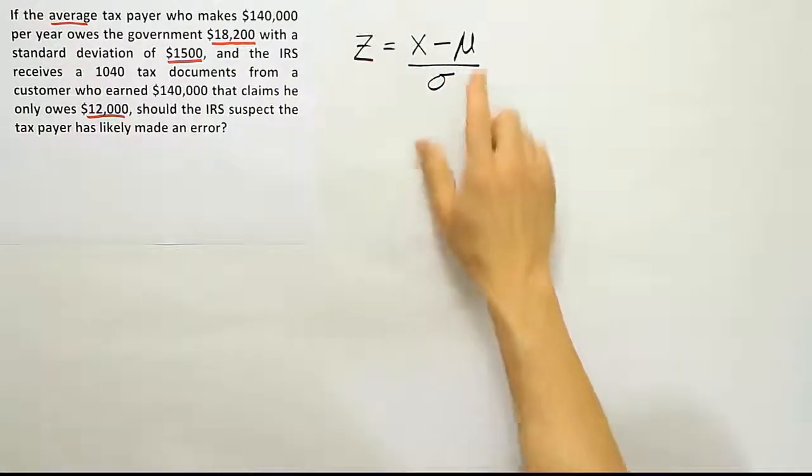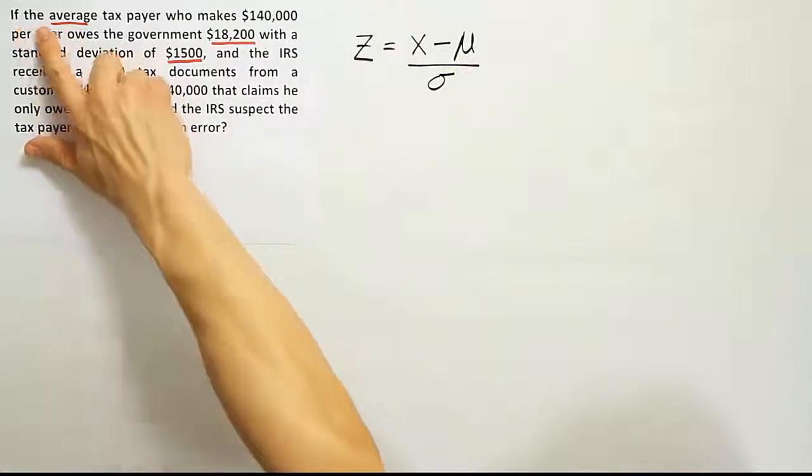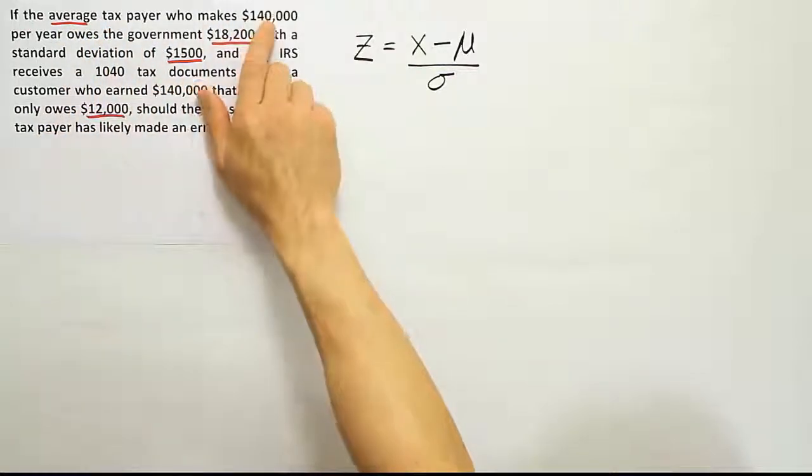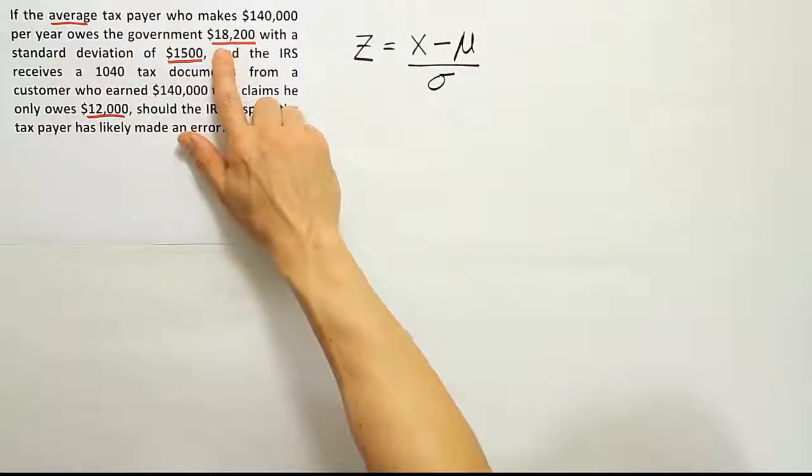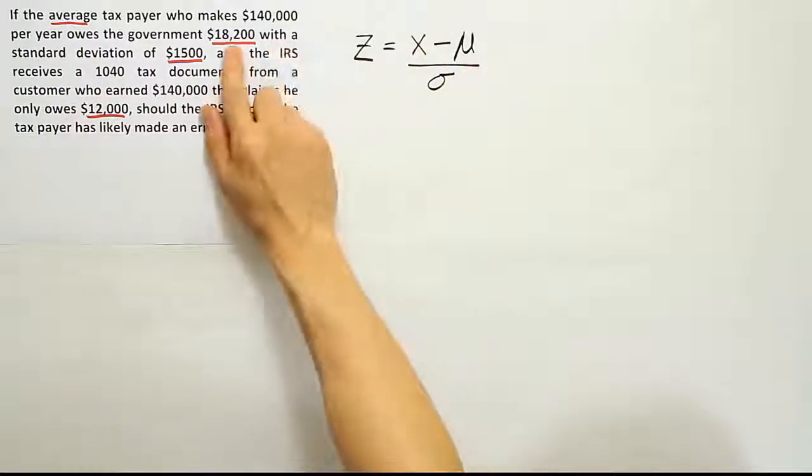Now let's make sure we have these values in the problem. You can see I've underlined them. If the average taxpayer who makes $140,000 per year owes the government $18,200, so that's our mean. That's how much the typical taxpayer who makes this much money per year would owe.